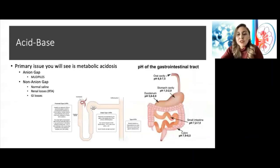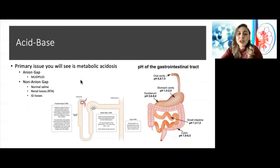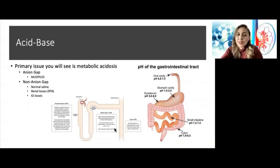To finish off, briefly about acid-base. In urology, the most common thing you'll see is metabolic acidosis. It would be rare to see metabolic alkalosis. The most common things you will see are a non-anion-gap metabolic acidosis from either an RTA or from ileal conduits.